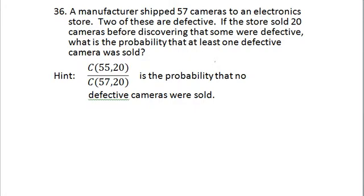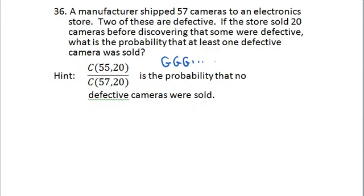First, I would look at the 57-camera inventory and partition it into two pieces. There are the cameras that are good — not defective — I'll call them G for good, and there are 55 of those. And there are two defectives. So of the 57 cameras in the inventory, we can partition that into the 55 good ones and the two defectives.